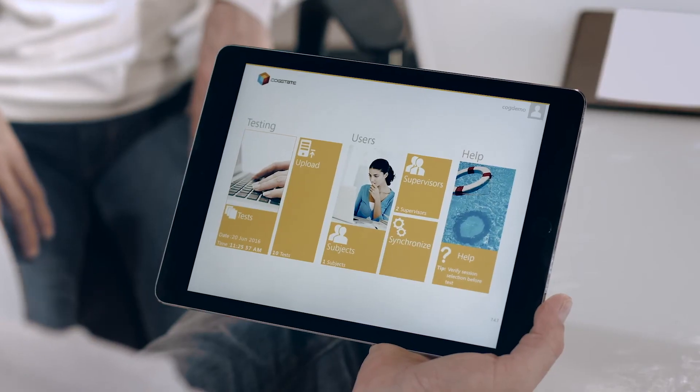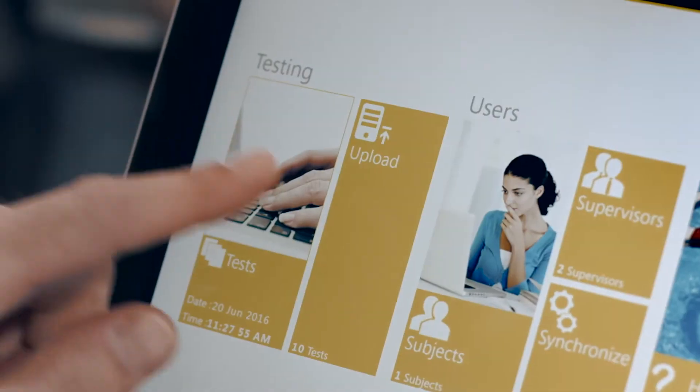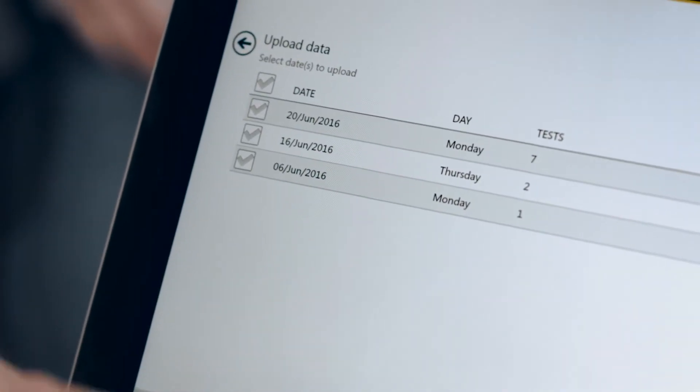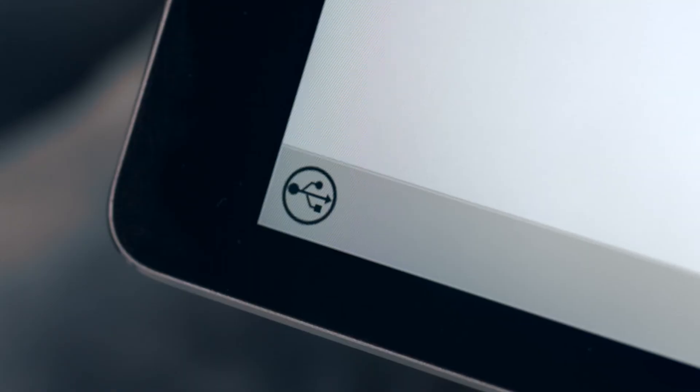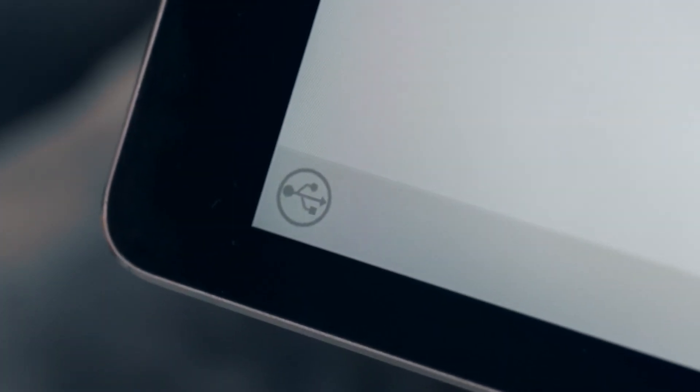Data processing and scoring is automated to drive endpoint reliability, so the last step is for the test supervisor to connect to Wi-Fi and upload the results to fully encrypted servers for real-time access.